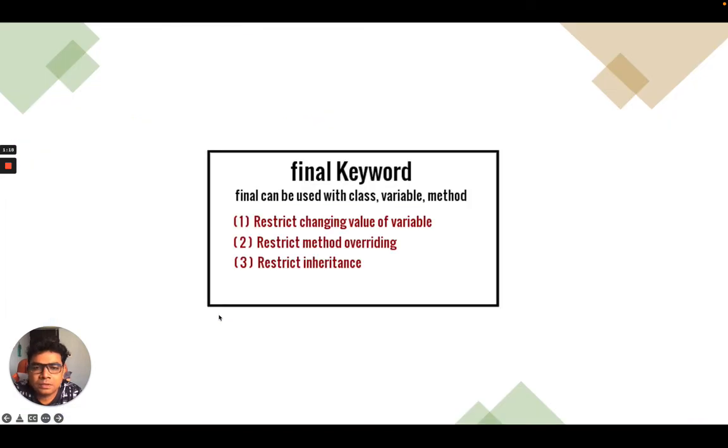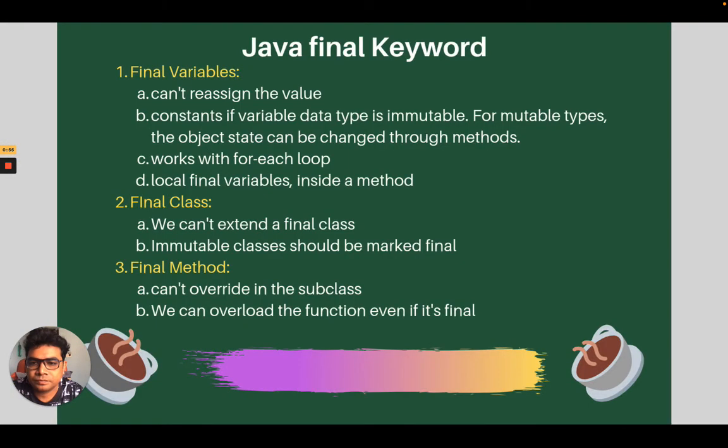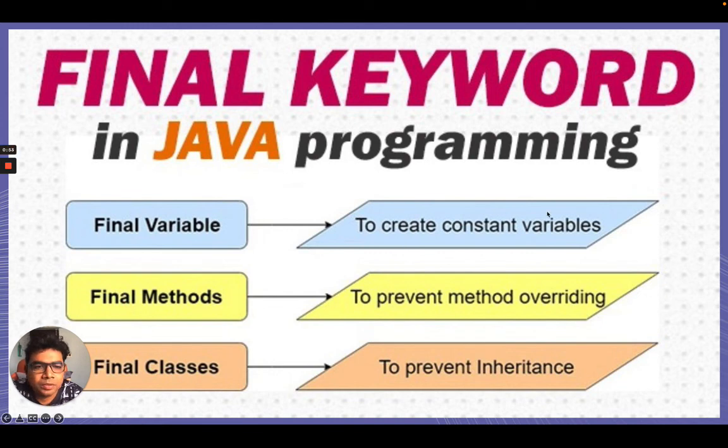So today we learned how to use the final keyword. So we can use the final keyword with class variables and method. When using with variable, it restricts changing the value of variable. If it is used with method, it restricts method overriding. And if it is used with the class, it restricts the inheritance. So that's all from today's video for the final keyword. I hope you guys understand how to use and why to use final keyword. If you have any question related to final keyword in Java, how to use, when to use, or for any issue, you can write in the comment box. And if you think the videos are helpful, you can like and subscribe the video. Thank you so much for watching.